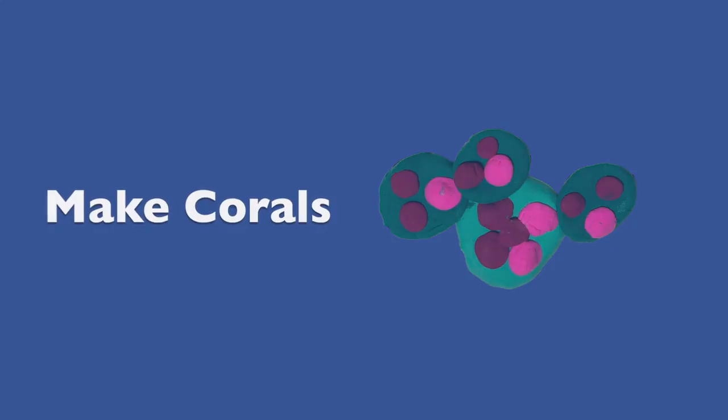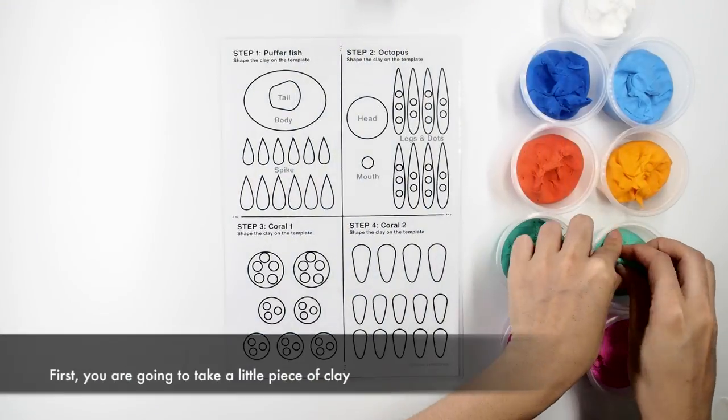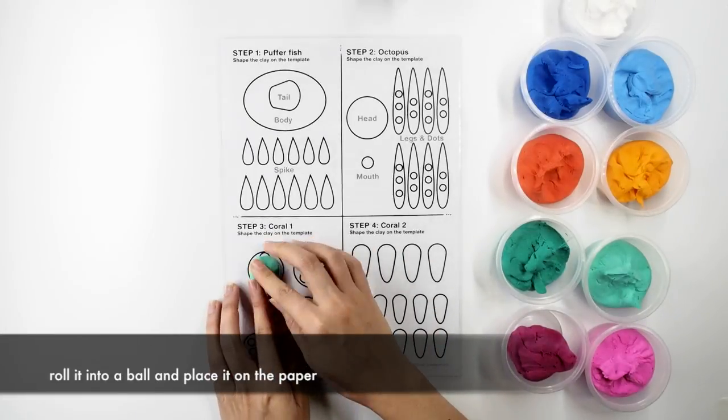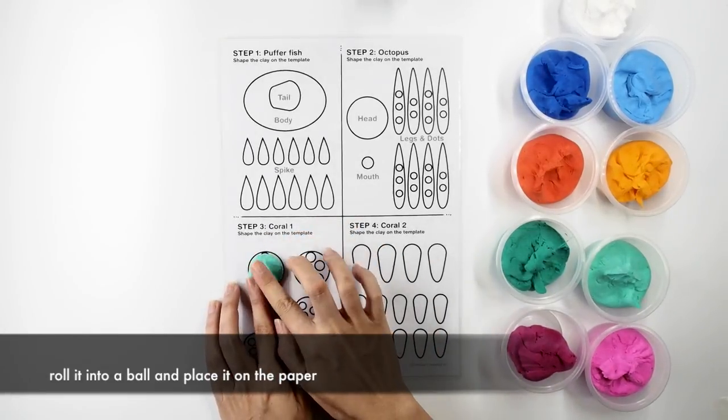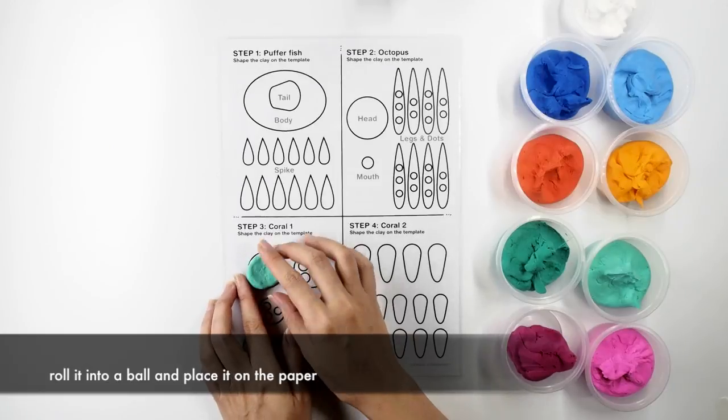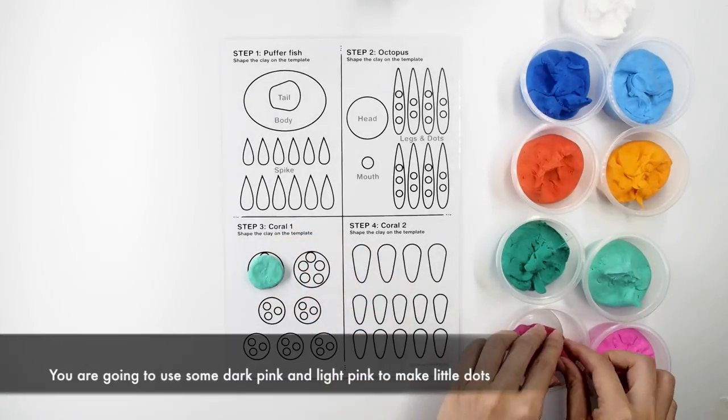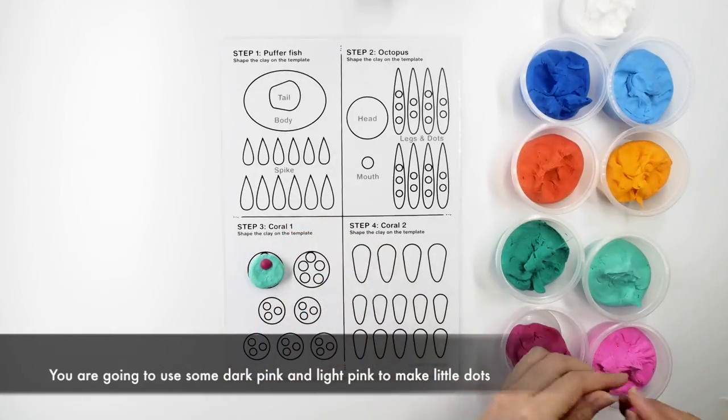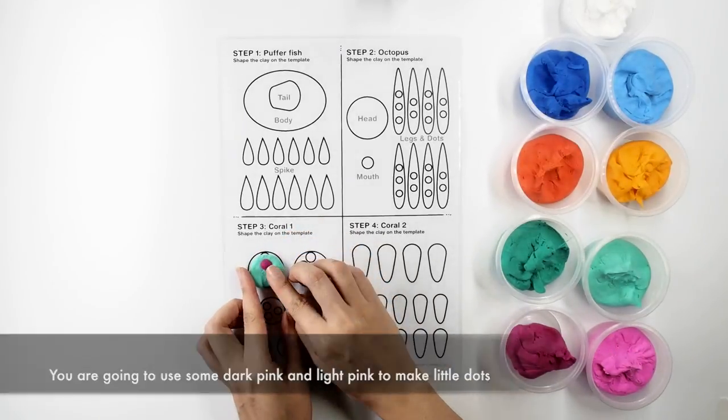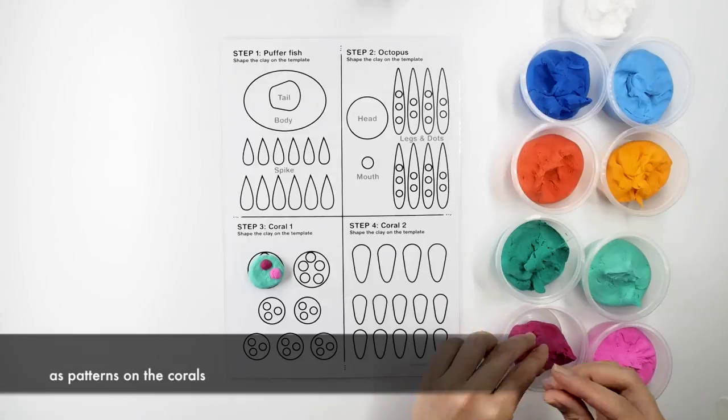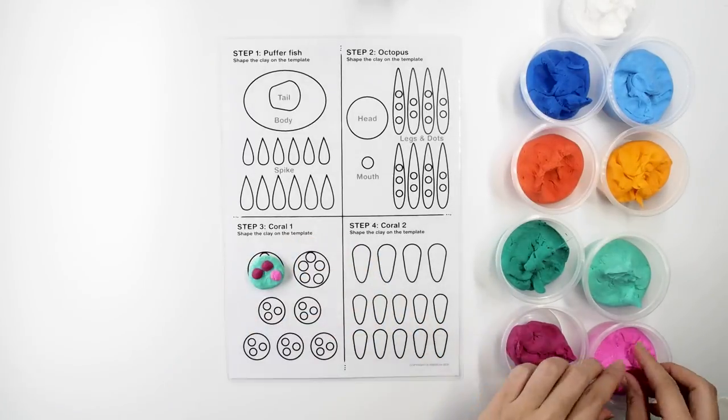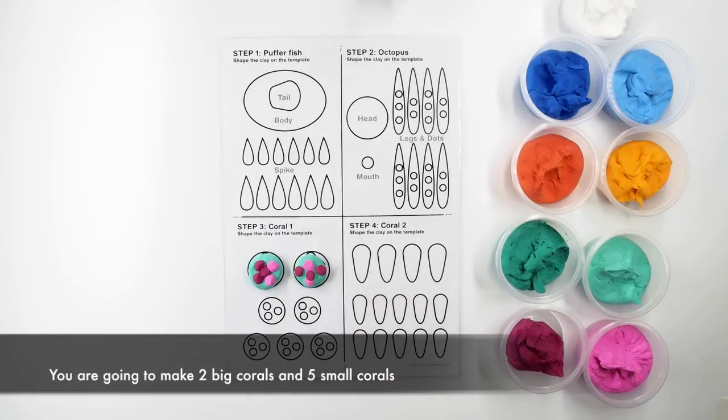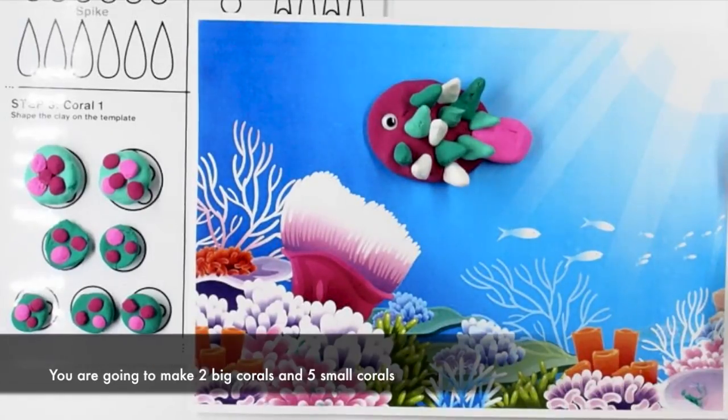Let's make some corals. First, you're going to take a little piece of clay, roll into a ball and place it on the paper. You're going to use some dark pink and light pink and make little dots as patterns on the corals. You're going to make two big corals and five small corals.